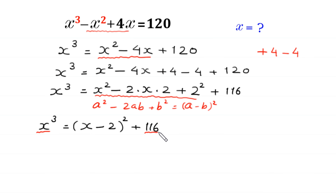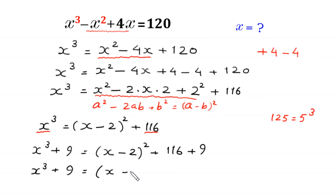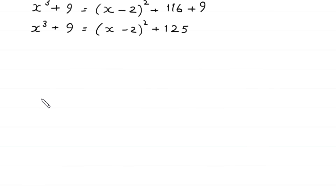Now we notice that 116 is close to 125, which equals 5 cubed. So we add 9 to both sides: x cubed plus 9 equals (x minus 2) squared plus 116 plus 9, which gives x cubed plus 9 equals (x minus 2) squared plus 125.